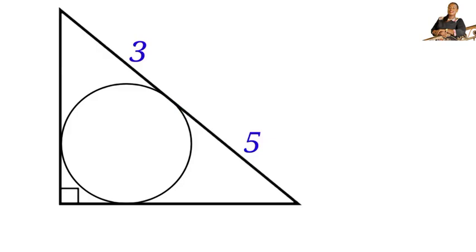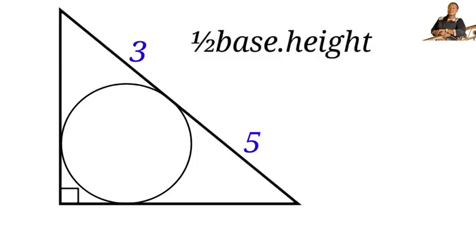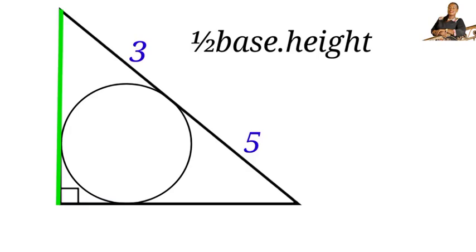Solution. To find the area of this triangle, we need to use the formula for finding the area of a triangle, which is half base times height. This is our base and we are not given the length of the base, and this is also the height — we are not given the length of the height. We are to find the height and the base of this triangle.